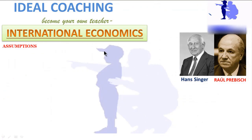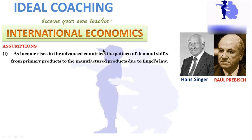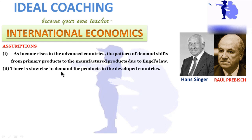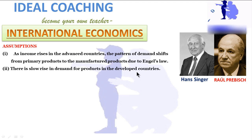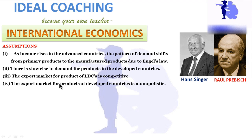Prebisch and Singer gave several assumptions for their thesis. First, as income rises in advanced countries, the pattern of demand shifts from primary products to manufactured products, due to Engel's Law. Second, there is slow growth in demand for LDC products in developed countries. Third, the export market for LDC products is competitive — many countries offer the same primary goods — while the export market for developed country products is monopolistic.